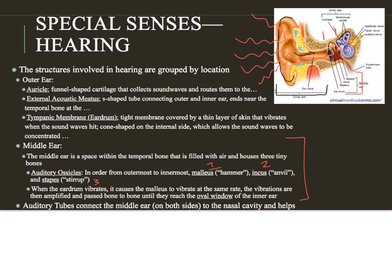Those are Latin or Greek names. In English, they translate based on the shape of the bone: the first is the hammer, the second is the anvil, and the third is the stirrup. As the eardrum vibrates, it hits the hammer, the hammer then hits the anvil, and the anvil finally hits the stirrup.